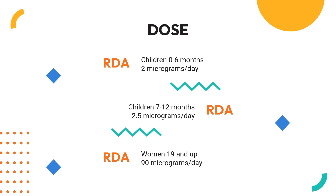Adequate intake by group — Children 0–6 months: 2 mcg/day; Children 7–12 months: 2.5 mcg/day; Children 1–3: 30 mcg/day; Children 4–8: 55 mcg/day; Children 9–13: 60 mcg/day; Girls 14–18: 75 mcg/day; Women 19 and up: 90 mcg/day; Women pregnant or breastfeeding 19–50: 90 mcg/day; Women pregnant or breastfeeding under 19: 75 mcg/day; Boys 14–18: 75 mcg/day; Men 19 and up: 120 mcg/day.